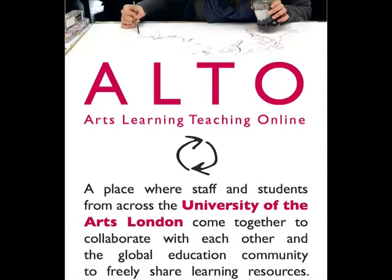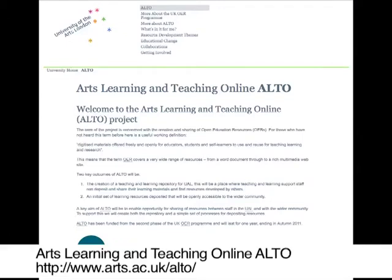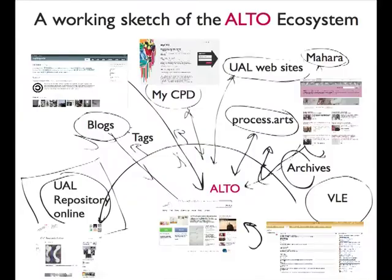The University of the Arts London received funding in 2010 to engage the university with a rapidly growing global open education resource movement. The Aalto Arts, Learning and Teaching Online project is concerned with the creation and sharing of open education resources. Process Arts has since come under the umbrella of Aalto and is now seen as the participation and workshop area of the whole ecosystem, with these areas replicated across lots of other websites. Process Arts is just one of these spaces where resources and participation happens.